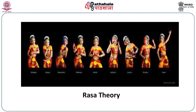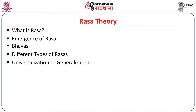Amongst the various topics, the most important one is Rasa. In the Rasa theory, the following questions are answered: What is Rasa? How does Rasanishpati happen — how does Rasa emerge? What are Bhavas? What are the various types of Rasas? And the most complicated topic called Universalization or Generalization — that's a difficult one, but let us make an attempt there.